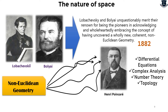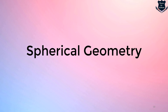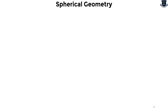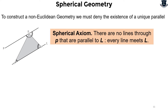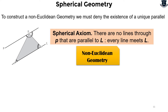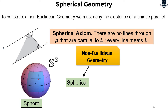The next important discovery leading to further formulations of geometry is spherical geometry. To construct a non-Euclidean geometry, we must deny the existence of a unique parallel. The hyperbolic axiom assumes two or more parallels, but there is one logical possibility of no parallels at all — this is the spherical axiom: there are no lines through point P that are parallel to line L; every line meets L. This gives us two types of non-Euclidean geometry: spherical geometry, realized on the surface of a sphere, and hyperbolic geometry.